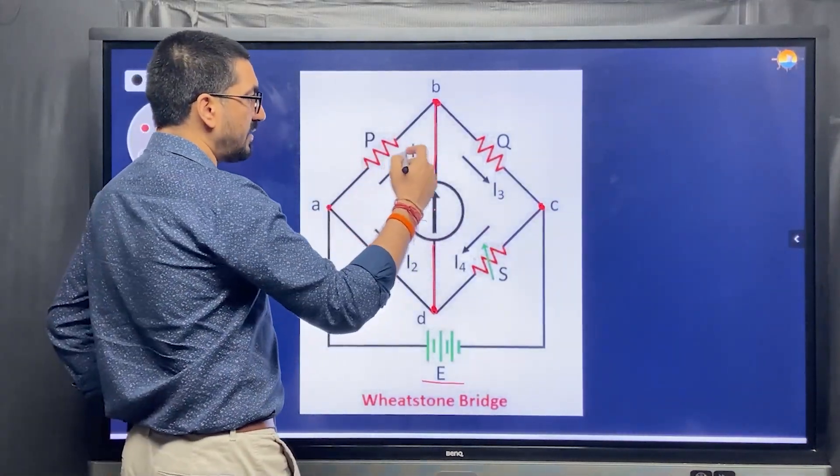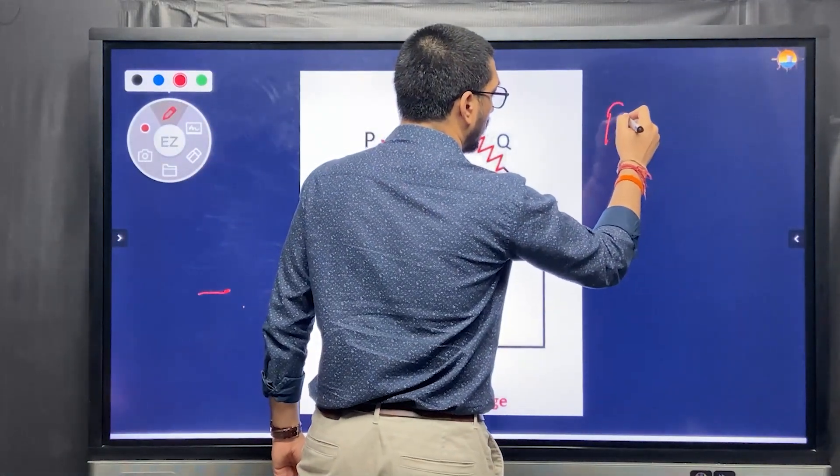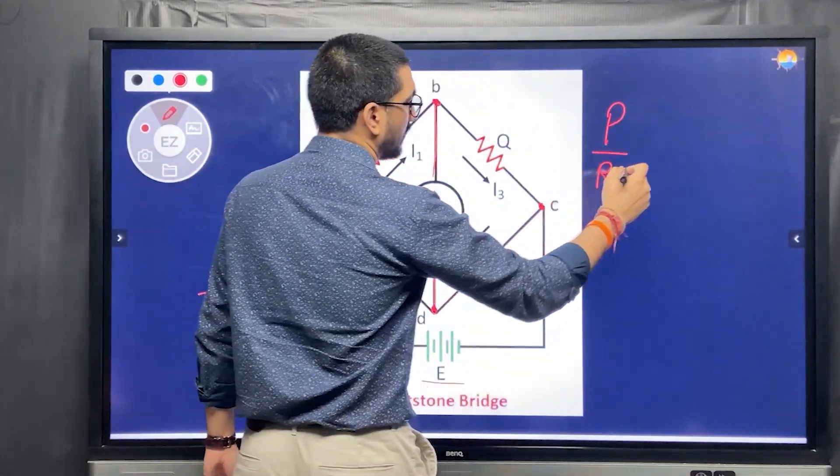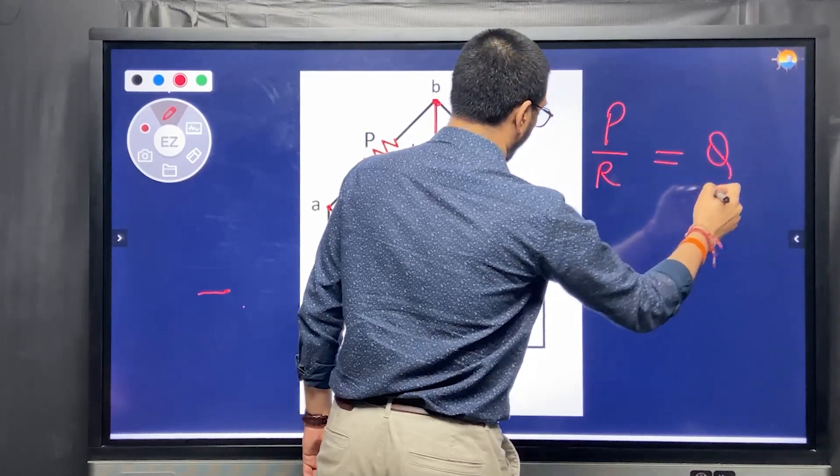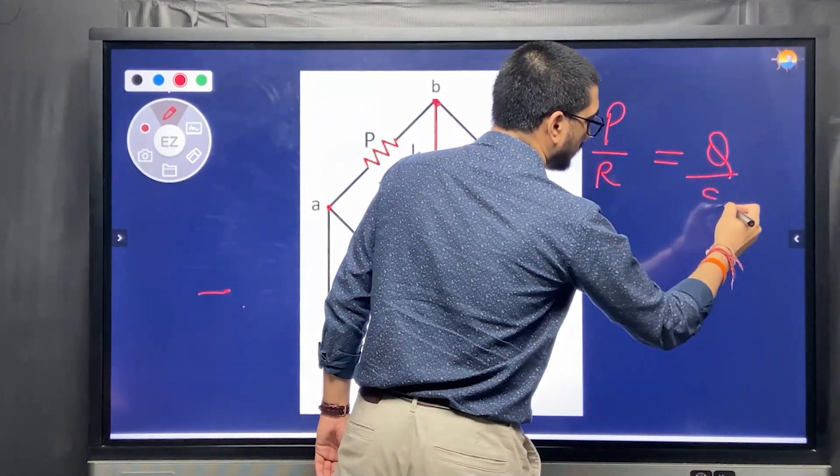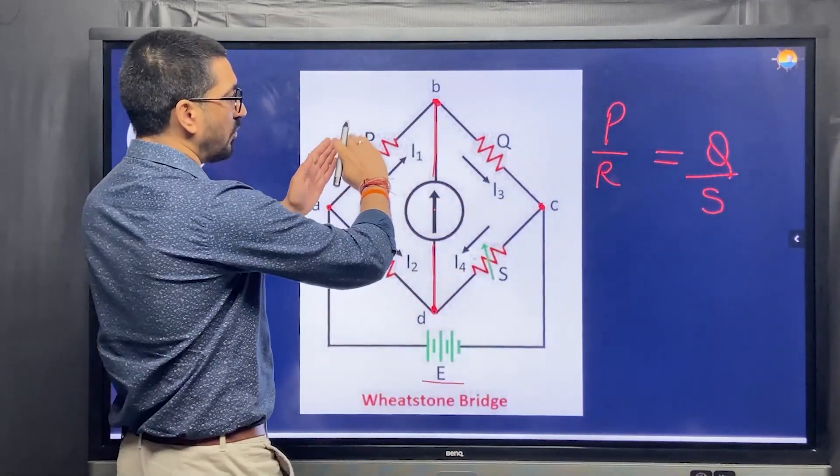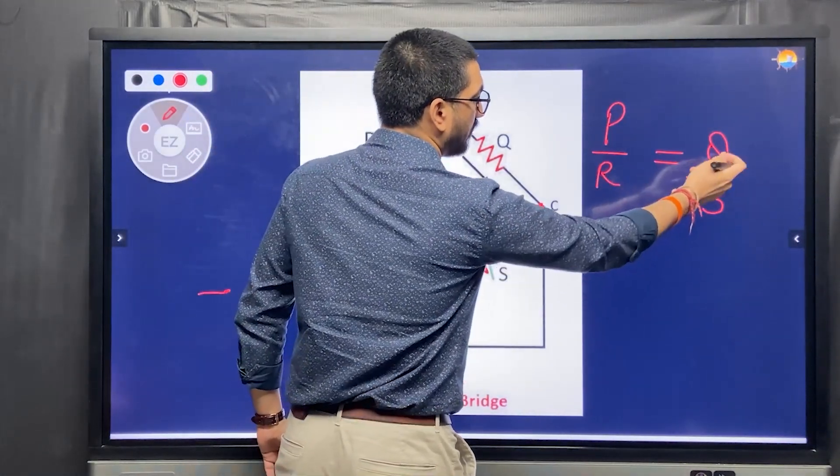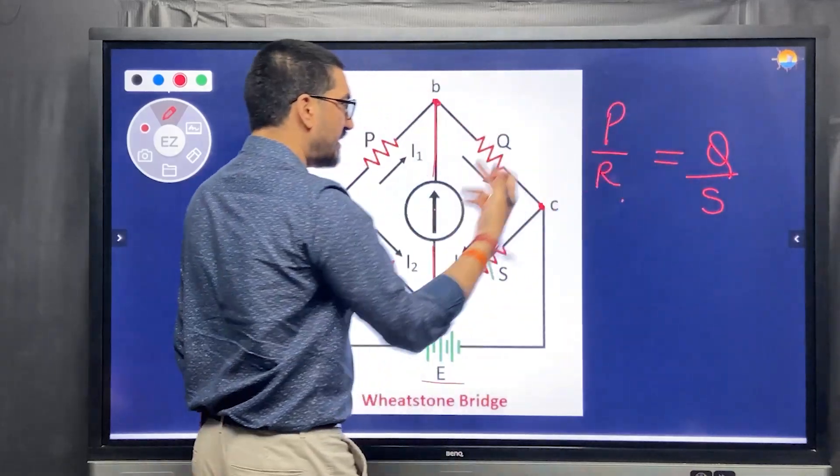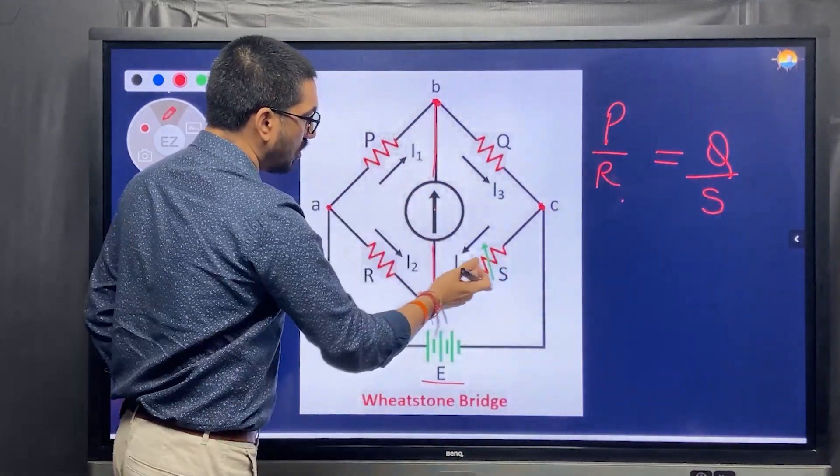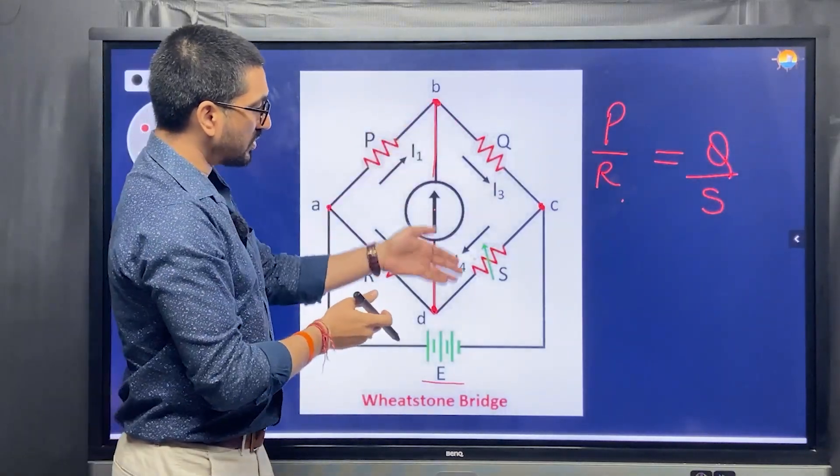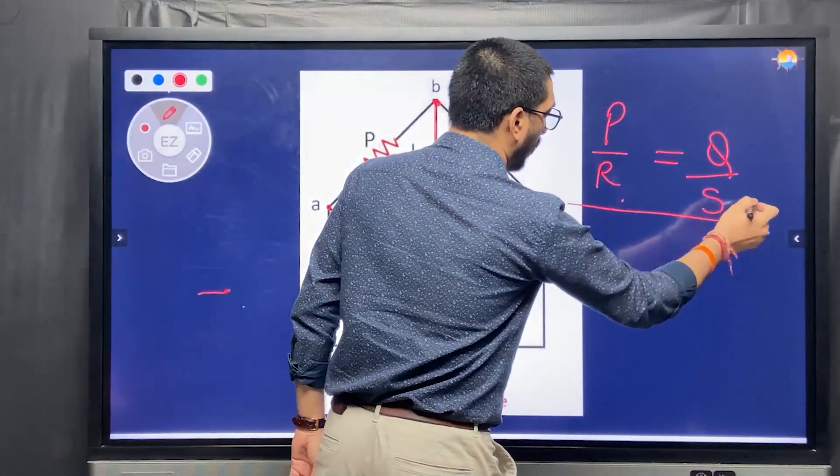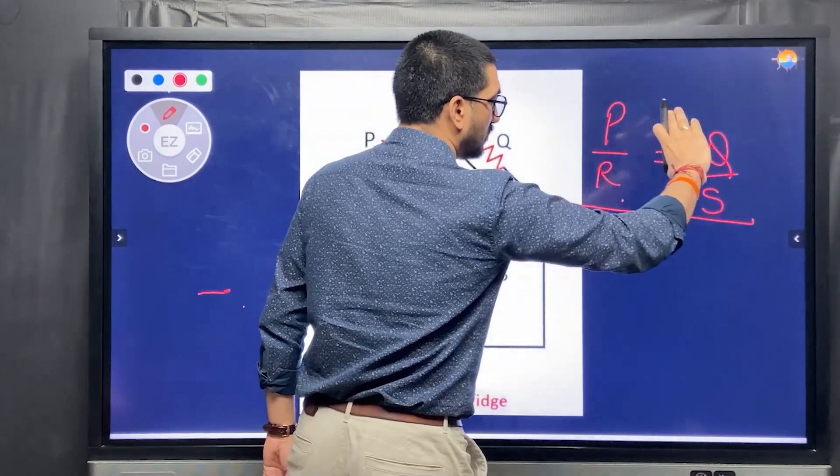For that, we need to take a ratio first. When we say it is balanced, the ratio of resistance P over R should be equal to Q over S, or you can also write P over Q equal to R over S. It is the same thing. You don't need to remember also. So when this is the condition, when this ratio is equal to this ratio, at that time, there will be no current flowing through this arm.